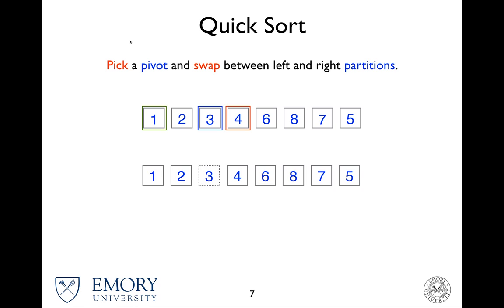Let's look at the left partition. The pivot is the very first value, and since there are only two keys in this list, both the left and right partition pointers point to the same thing, which is two. The only thing you can do is make them cross. At that point, the right partition pointer is pointing to one, which is also the pivot, so even if you do the swap, nothing happens.